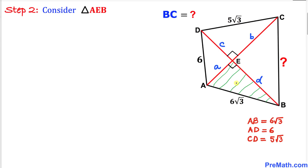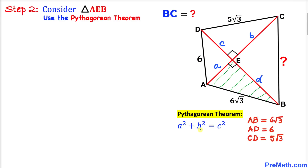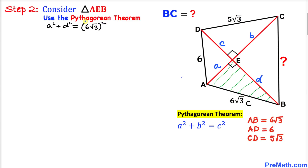Let's focus on triangle AEB. We know this is a right triangle, so we'll use the Pythagorean theorem: a² + b² = c², where the longest leg is c. For triangle AEB, applying the Pythagorean theorem gives us a² + d² = (6√3)².